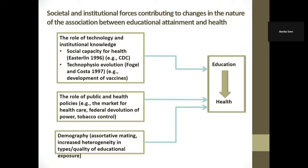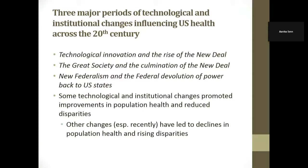I'm not going to talk about demography, which is what I know most about — I'm going to talk about the things I know least about. So I'm going to talk about three major periods. One is the technological innovation and the rise of the New Deal. This is where demographers actually were smart. What caused the rise in life expectancy in the American population over the first part of the 20th century? It's a lot of institutional changes filtered into the population, as well as massive technological change.